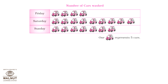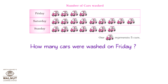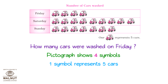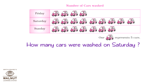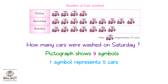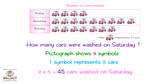Let's count the number of cars washed. The picture of one car represents five cars. How many cars were washed on Friday? The pictograph shows four symbols, and one symbol represents five cars, so four into five is equal to twenty cars washed on Friday. How many cars were washed on Saturday? The pictograph shows nine symbols, so nine into five is equal to forty-five cars washed on Saturday.